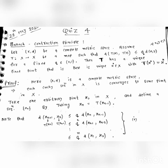Now, the distance between xₙ₊₁ and xₙ is always less than or equal to q times the distance between xₙ and xₙ₋₁, which follows from the statement of our theorem. Applying this relation inductively, we get that the distance between xₙ₊₁ and xₙ is always less than or equal to qⁿ times the distance between x₁ and x₀.